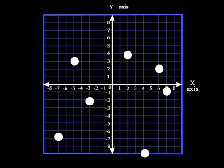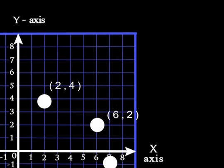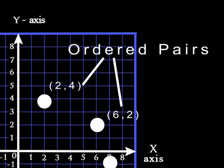Each of these points have coordinates. Coordinates are numbers that tell you where a point is located. These coordinates are called ordered pairs because they are always in order.